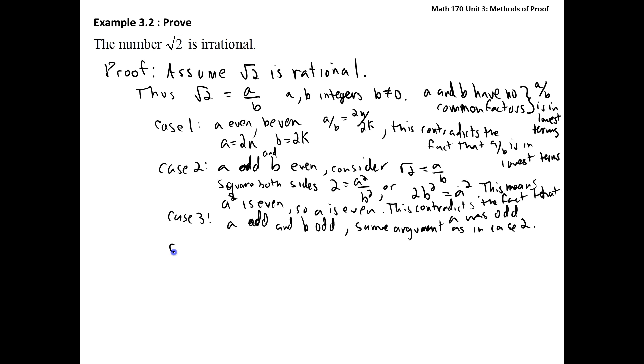So the final case, then, would be if a is even and b is odd. That's the final case. Let's show how this also leads to a contradiction. Go back to our original statement that the square root of 2 must be equal to some a over b. So if we make that same conclusion, that a squared is 2b squared, squaring and then multiplying.